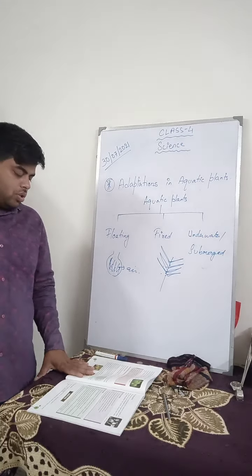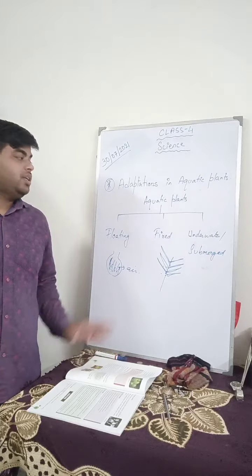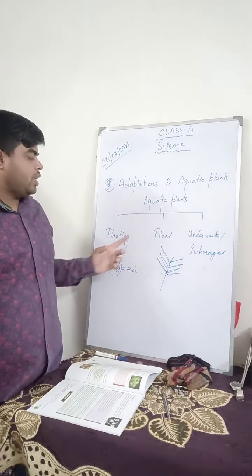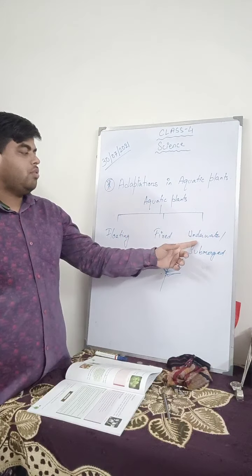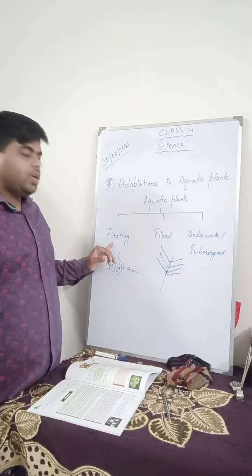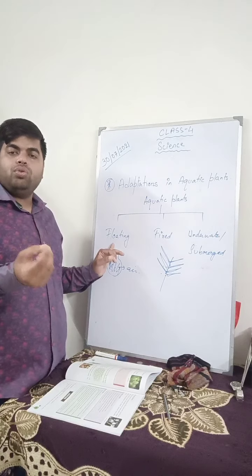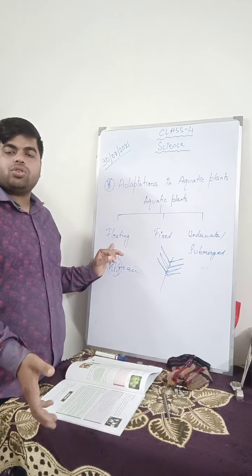I hope you have understood the three different types of aquatic plants: floating, fixed, and underwater. Floating plants — their roots are not fixed to the soil, so they float on the surface of the water and move from one place to another.